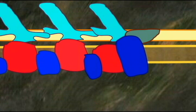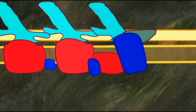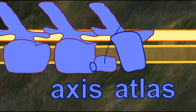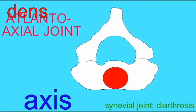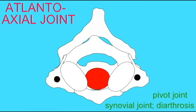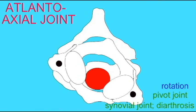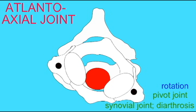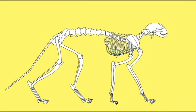First, the atlas-axis complex formed as separate bony elements consolidated to form the atlas and the axis, and the dens component fused to the axis, which allowed the rotation of the head in mammals.